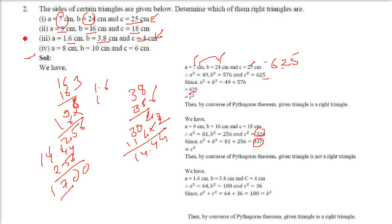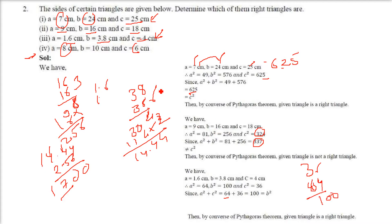In the fourth case, 8 square is 64 and 6 square is 36. 36 and 64 add up to 100, and 10 square is also 100. So this final, 4th one is a right angle triangle.